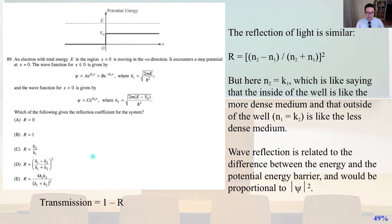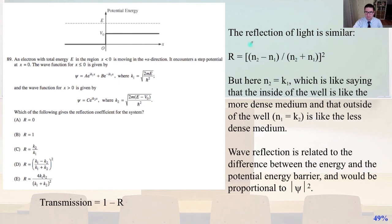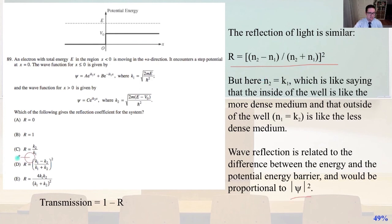Problem 89: an electron of total energy E in the region x less than zero is moving in the positive x direction. It encounters a step potential at x equals 0. The reflection coefficient for the system is: similar to reflection of light, R equals the quantity (k2 minus k1) divided by (k2 plus k1), that quantity squared, where k2 corresponds to the inside and k1 corresponds to the outside. That is answer D. Note: the transmission equals 1 minus R.